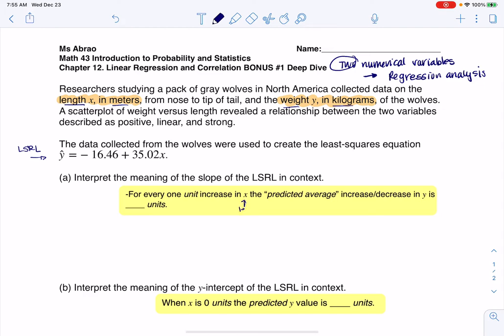My x variable here is length. Its units are meters. My y variable is weight, and its units are kilograms. The slope in and of itself, let's go get that from the line. If I take a look at this line, there's my slope of 35.02.